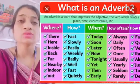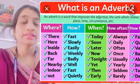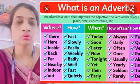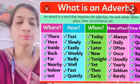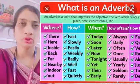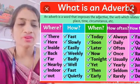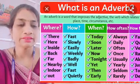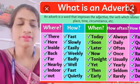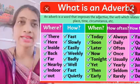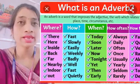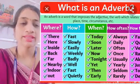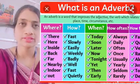Next — where. Ki koi bhi action kaha hua hai. Like above, below, everywhere, far, near, here, inside, outside — yeh saare words 'where' ki category mein aate hai.